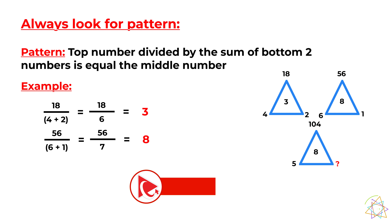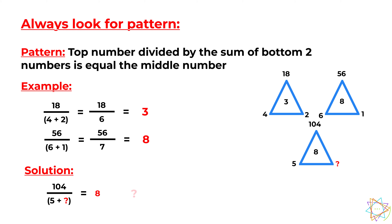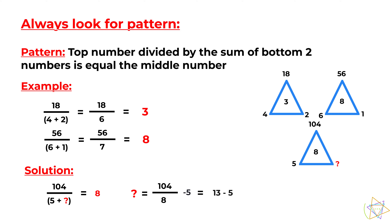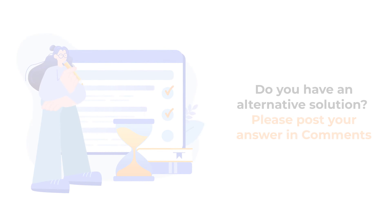Using that formula: 104 ÷ (5 + ?) = 8, so ? = 104 ÷ 8 − 5 = 13 − 5 = 8. The correct answer is choice B, 8. Hopefully you've nailed this question and now know how to answer similar problems on the test.